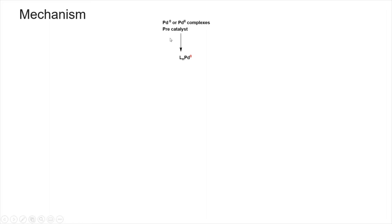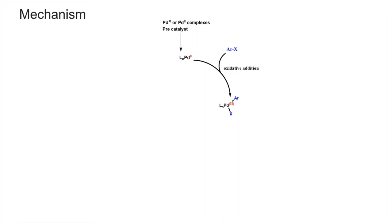The Sonogashira coupling became widely popular because it can be done at room temperature or slightly above room temperature. The copper-palladium catalyzed coupling of terminal alkynes — where there should be a hydrogen with the alkyne group — with aryl and vinyl halides to give internal alkynes is known as the Sonogashira cross coupling. Let's see the mechanism. Palladium(0) or Palladium(II) complexes can be used as a precatalyst. In the presence of ligand triphenylphosphine, palladium becomes the Pd(0)-ligand complex as the real catalyst. The first step is oxidative addition, shown here with an aryl halide.